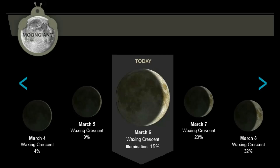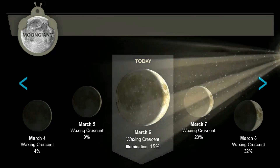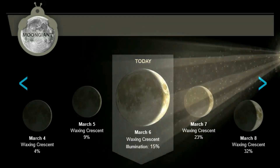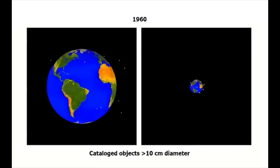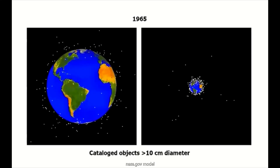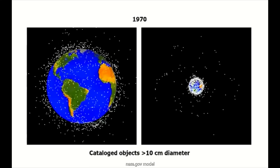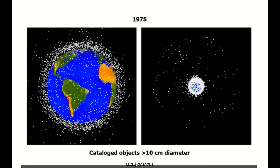For you lunar lovers, the moon tonight will be in the waxing crescent phase, illumination 15%. This model shows thousands of man-made objects — 95% of them, space junk, occupy low Earth orbit.